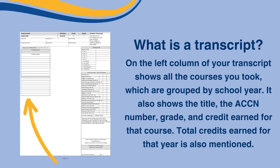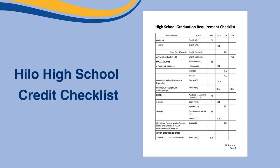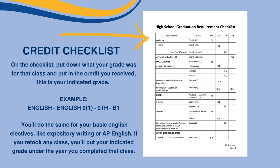Now let's look at your credit checklist that is in your STARS Google Classroom. You can use your transcript to fill it out, and remember this form is required for your PTP. For classes that you're currently taking, put your anticipated grade for the class.